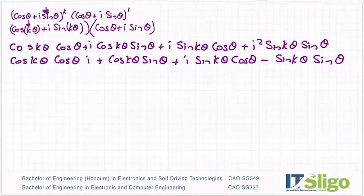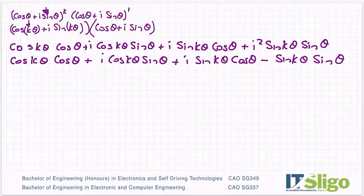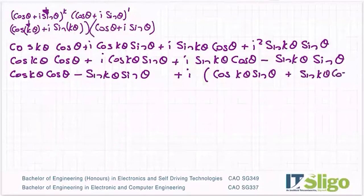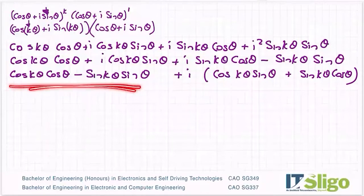So in a lot of complex numbers, you end up grouping reals to reals and imaginaries to imaginaries. Therefore I'm going to write these two beside each other. Cos k theta cos theta minus sine k theta sine theta. And then I'm going to factor out the i out of the other ones. So all I'm literally doing is factoring out the i and grouping them together.